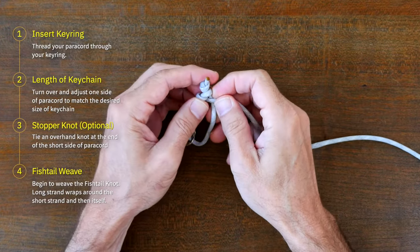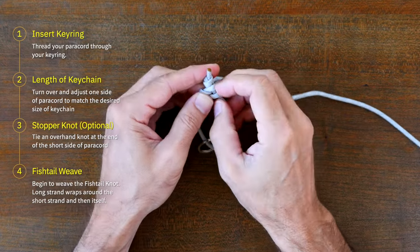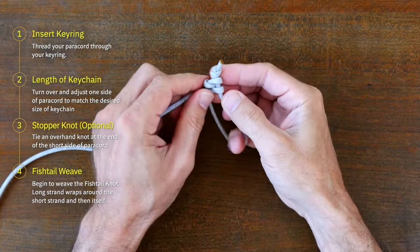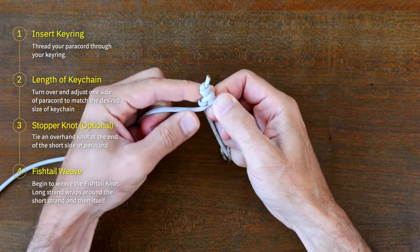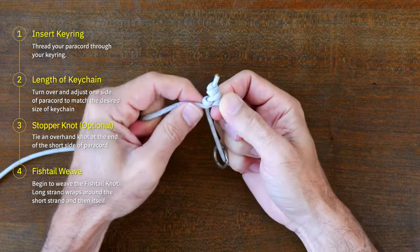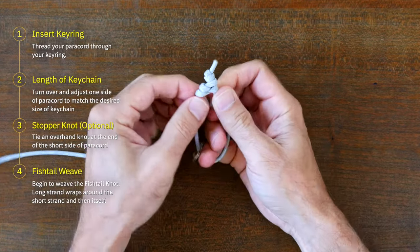Then around the right strand and then around the left strand, cinching the weave tight as I go. Continue to follow this simple weave all the way down to the end of your paracord keychain.